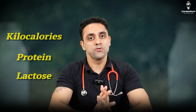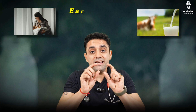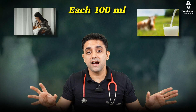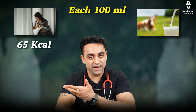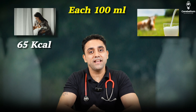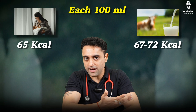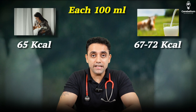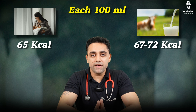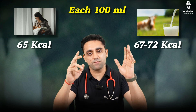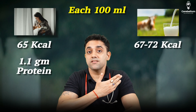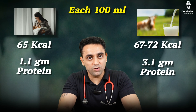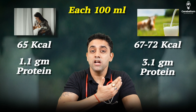Everything is based on per 100 ml. Each 100 ml of breast milk contains 65 kilocalories, whereas cow's milk contains 67 to 72 kilocalories. For protein content — very important for exams — each 100 ml of breast milk contains 1.1 gram of protein, and cow's milk contains 3.1 gram of protein.